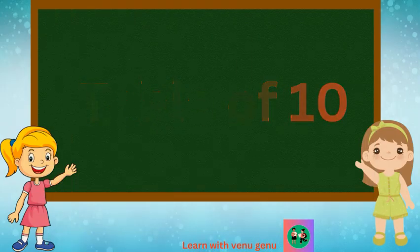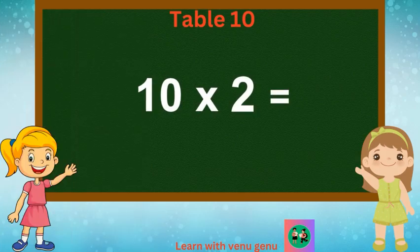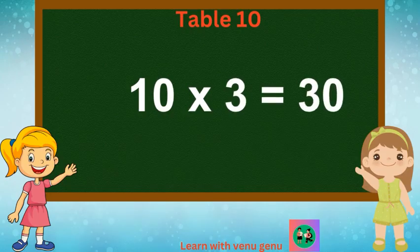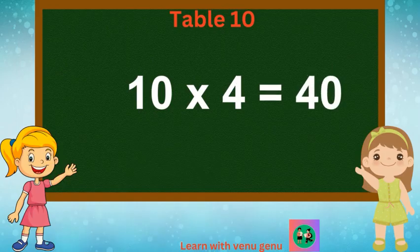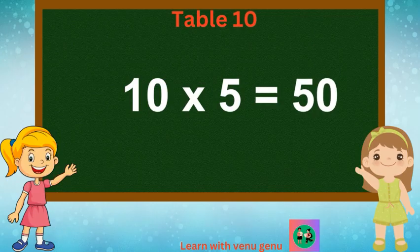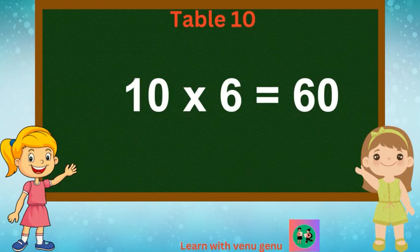Table of 10. 10 1s are 10. 10 2s are 20. 10 3s are 30. 10 4s are 40. 10 5s are 50. 10 6s are 60.